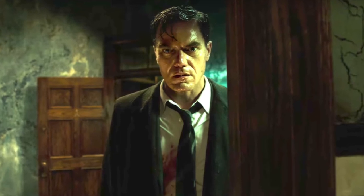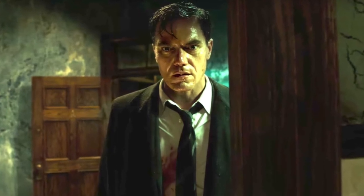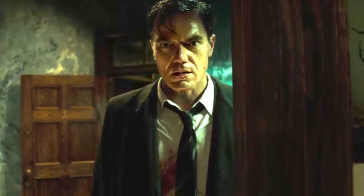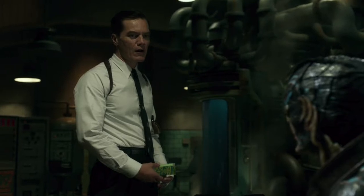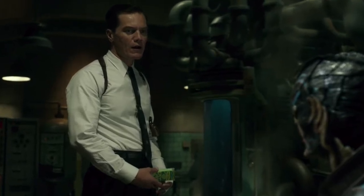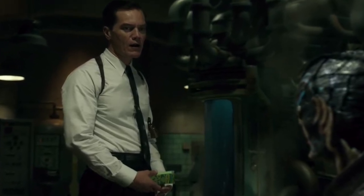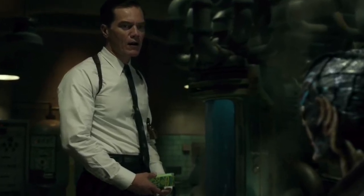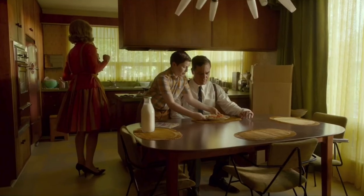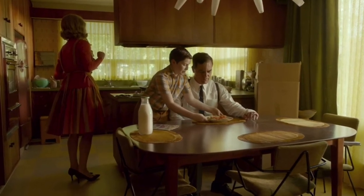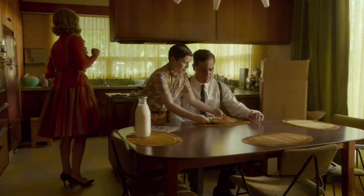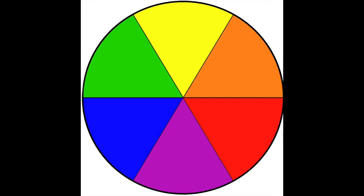First is Strickland, Eliza's boss. He's a military man who enjoys order and discipline. His character doesn't strive to change and progress into the future, but doesn't seem to fight progress either. This neutral position is shown in scenes with his family where the main color scheme is yellow. Note that yellow sits between red and green on the color wheel.